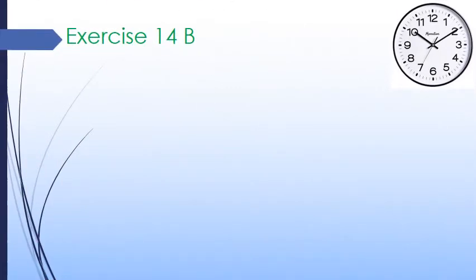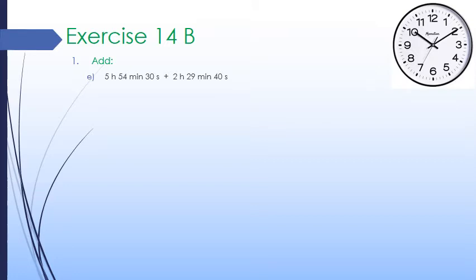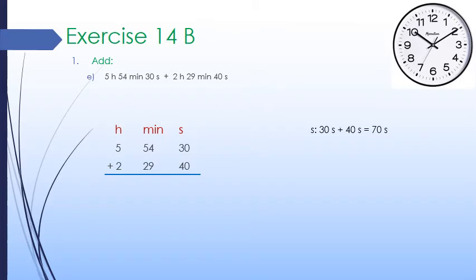Now let's solve some questions from Exercise 14b. The first question is to add. We will do part E of question number 1. It is 5 hours 54 minutes 30 seconds plus 2 hours 29 minutes 40 seconds. We will make 3 columns of hour, minute, seconds and start the addition from the second column.